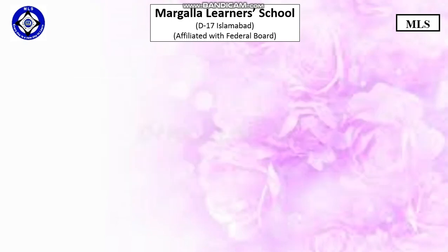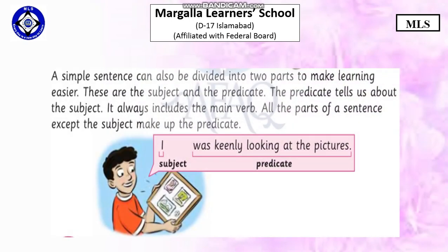Now let's come to the last one. A simple sentence can also be divided into two parts to make learning easier. These are the subject and the predicate. The predicate tells us about the subject. It always includes the main verb.